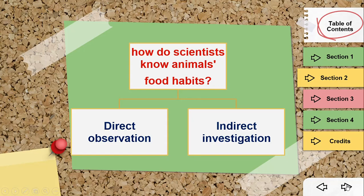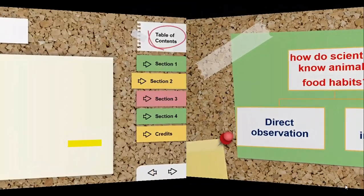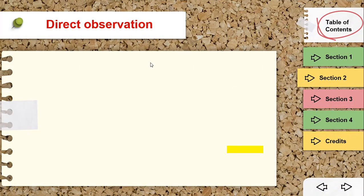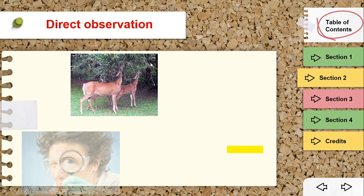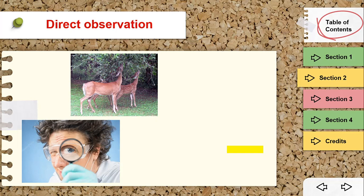Let us explain them one by one. For direct observation, let us see these pictures to understand. For example, the scientist will go to the forest and observe or monitor an animal to see what it eats. He will usually use tools like a magnifier or a camera to notice and observe what the animal eats.